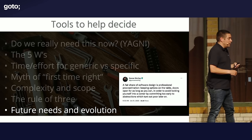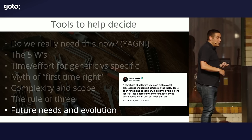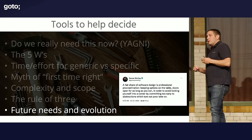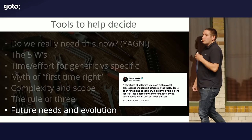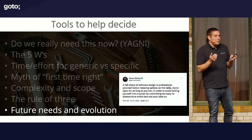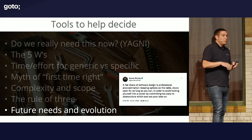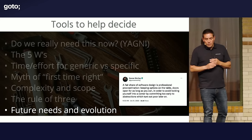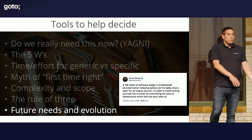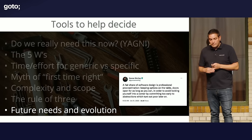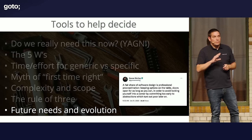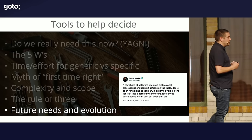As Gunnar Molling said, a fair share of software design is about professional procrastination — keeping options on the table and doors open for as long as you can, to avoid locking yourself into a corner by committing too early on something.